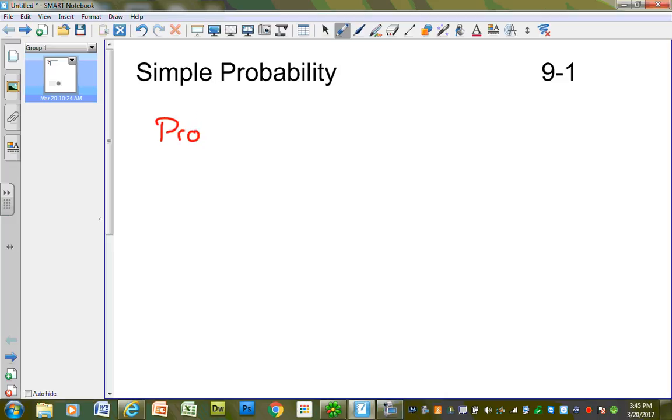So, probability is the chance something will happen. The chance an event will happen.